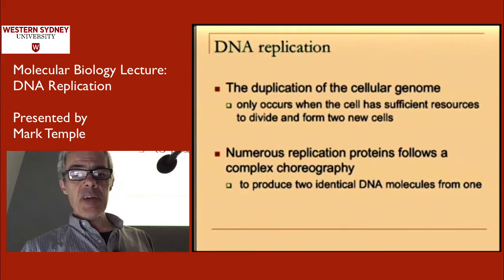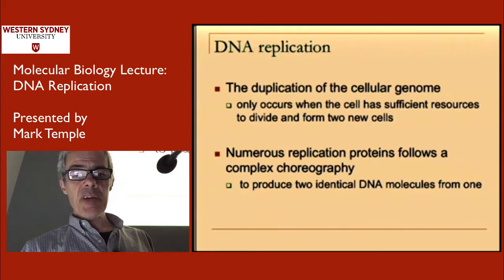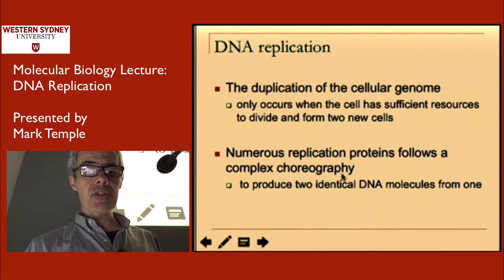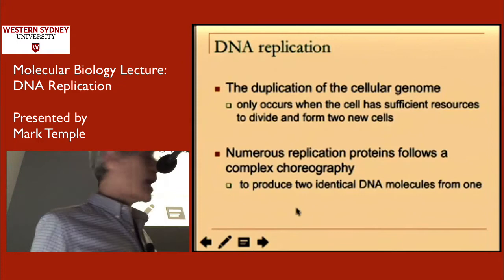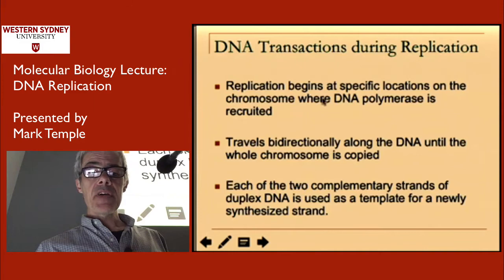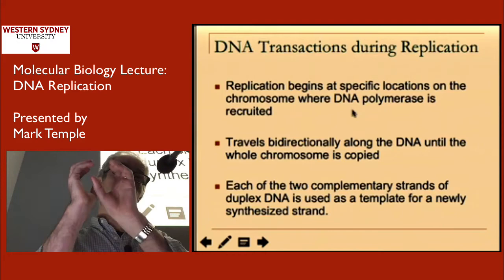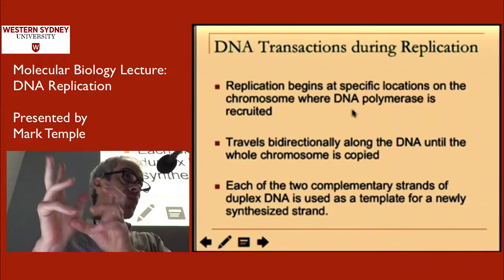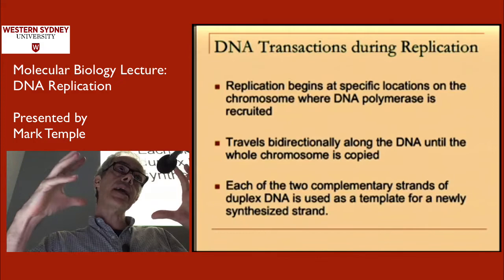We're going to be looking at the duplication of the cellular genome and the complex choreography that occurs so that this process can happen. The textbook has three things to tell you about DNA replication. Firstly, it only begins at specific locations in the chromosome — there are particular parts of the chromosomal sequence that don't code for proteins, where the sequence is there to initiate DNA replication. There are key sequences that are important to initiate the process.